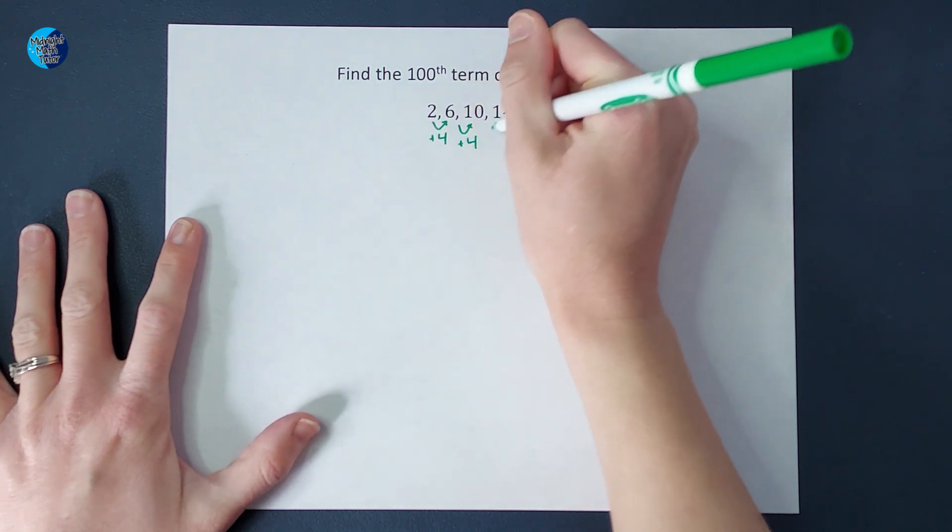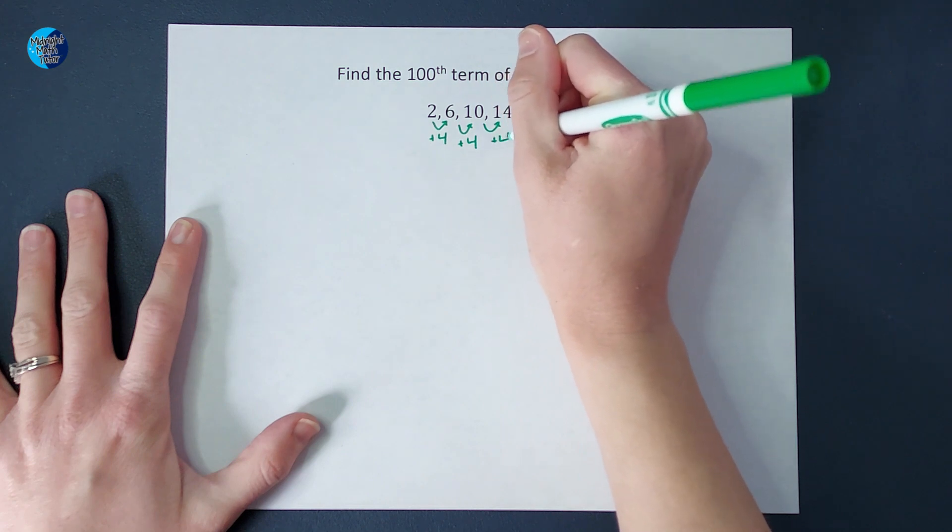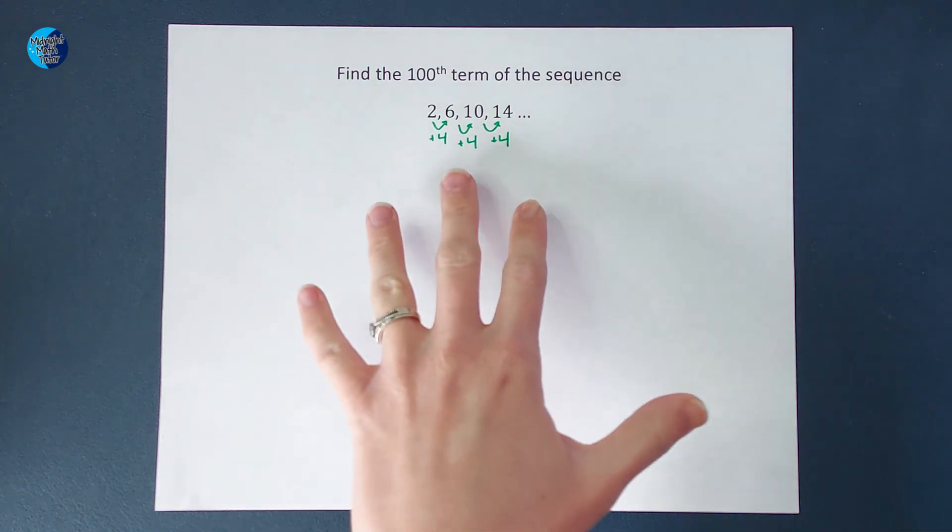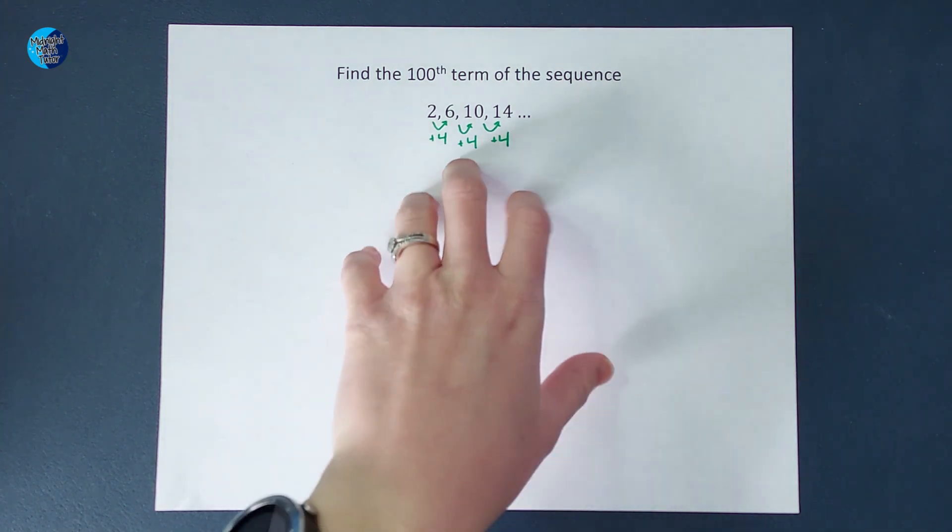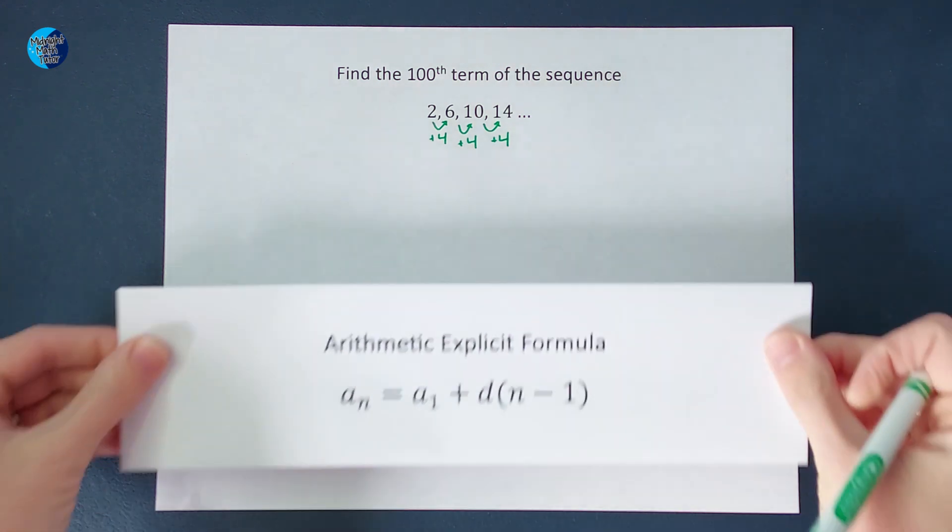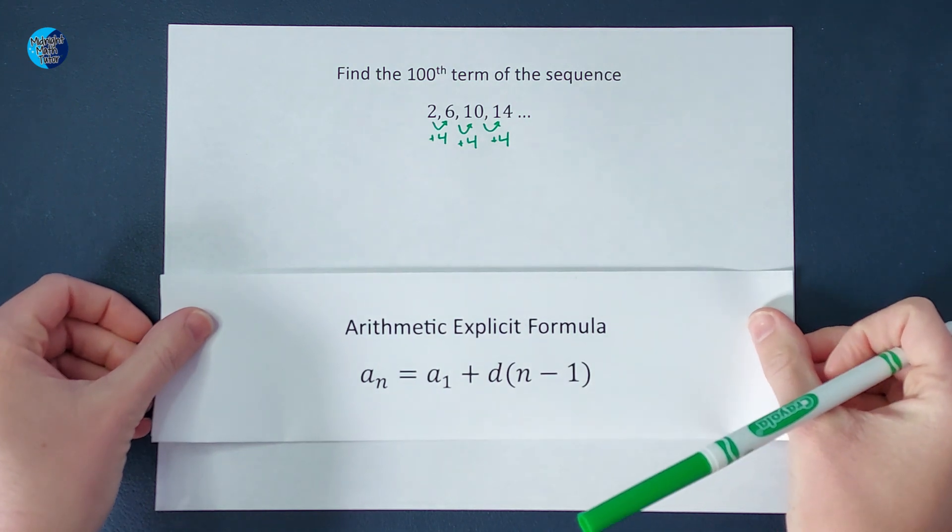So I could literally add four till I got to the hundredth number if I really wanted to, but I don't really want to do that. So I am going to use an explicit formula because we are adding the same number over and over. I know this is an arithmetic sequence and I want to use an explicit formula to figure it out. So guess what I'm going to use? An arithmetic explicit formula.